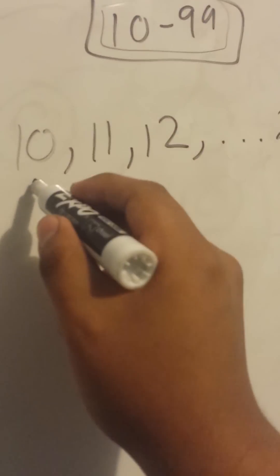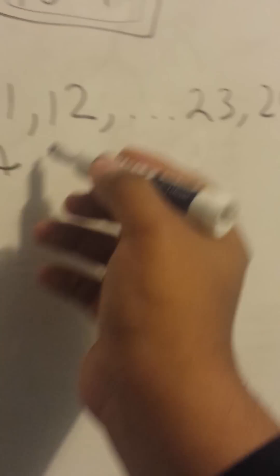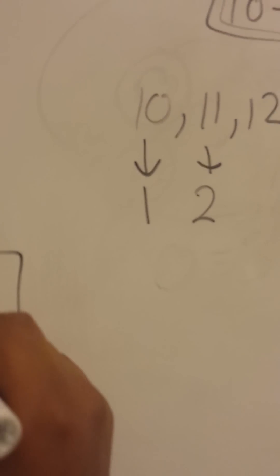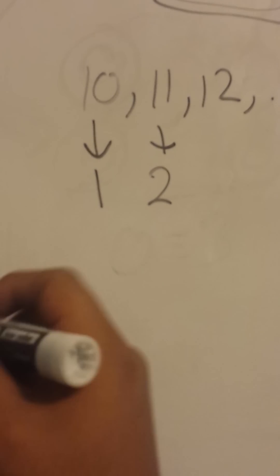Mod 9 is the way to figure this trick out. For example, 10 mod 9: 9 goes into 10 once with remainder 1, so that's 1. For 11: remainder 2. In mod 9 the only numbers that exist are 0, 1, 2, 3, 4 all the way up to 8.